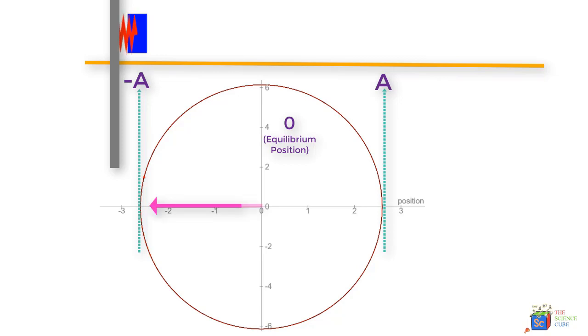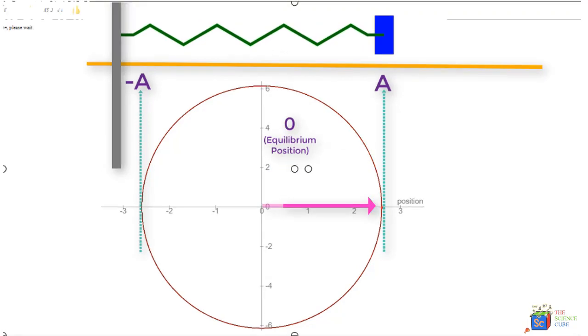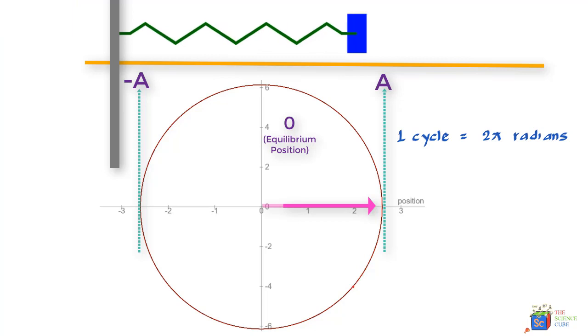So you see, half a circle has been covered and the mass has moved half a cycle—that is, from A to minus A. What we see is that when the mass completes one cycle, the dot completes one circle or 2π radians. Remember, one circular motion is 2π radians.